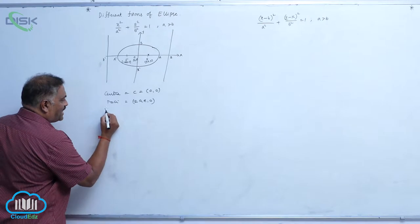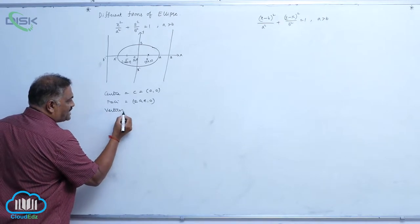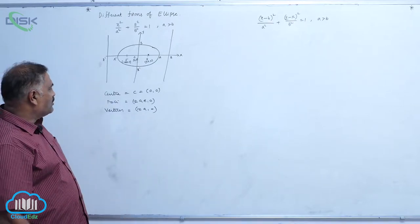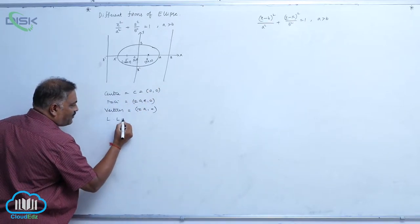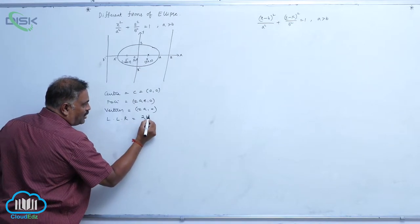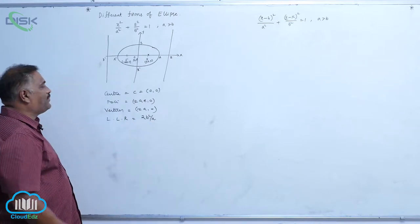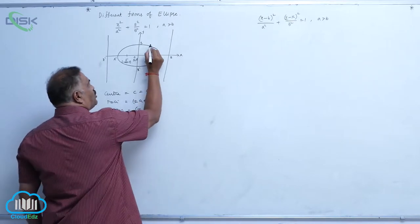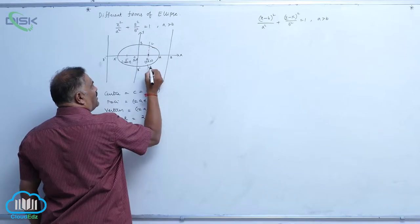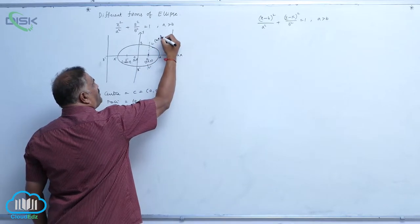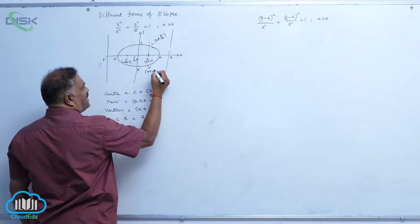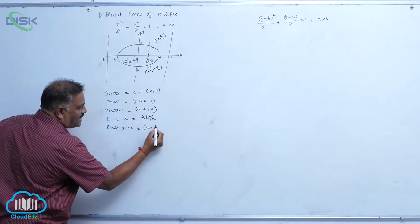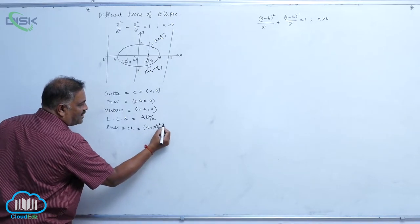The vertices are given by (±a, 0). The length of the latus rectum is 2b²/a. The ends of the latus rectum are given by (ae, ±b²/a).